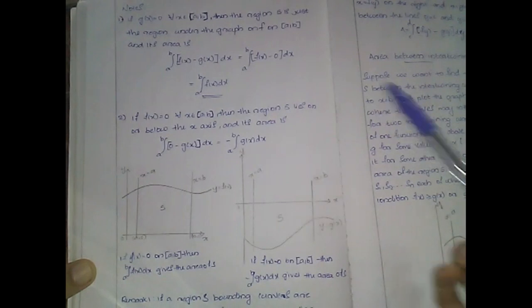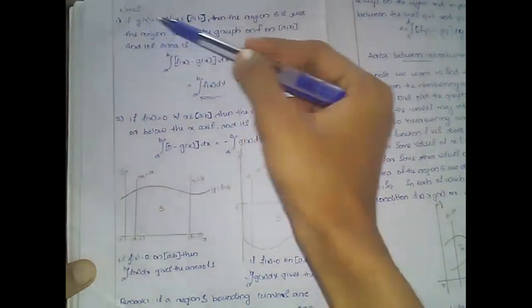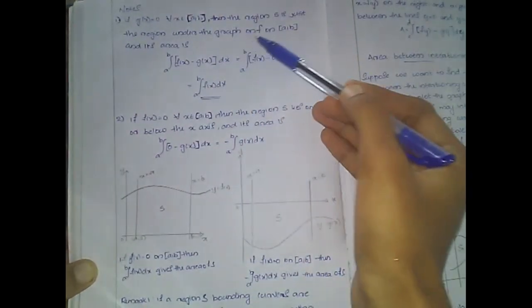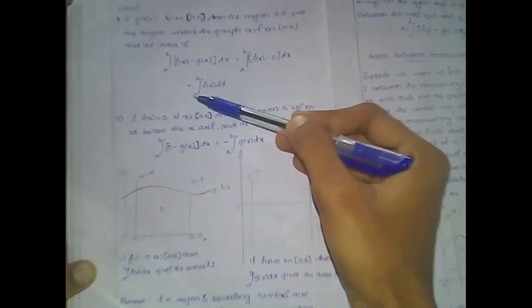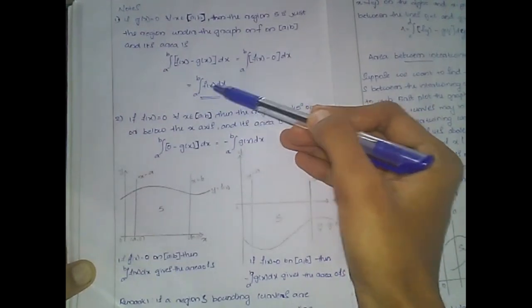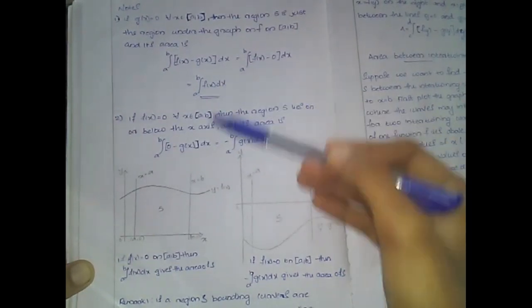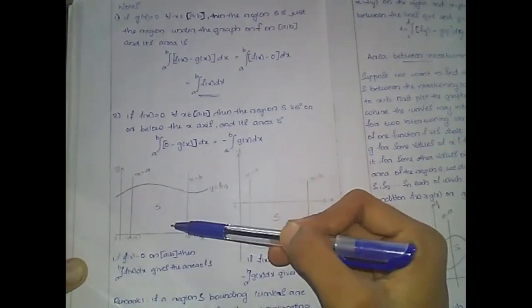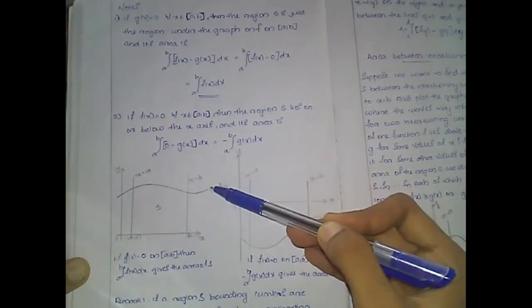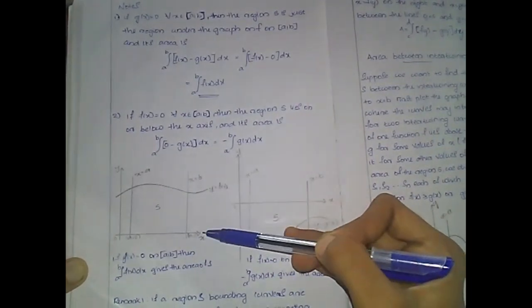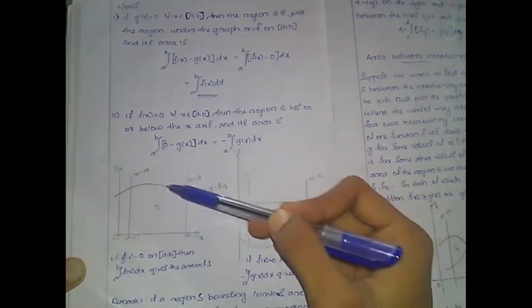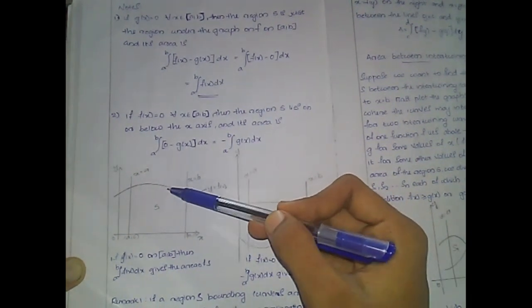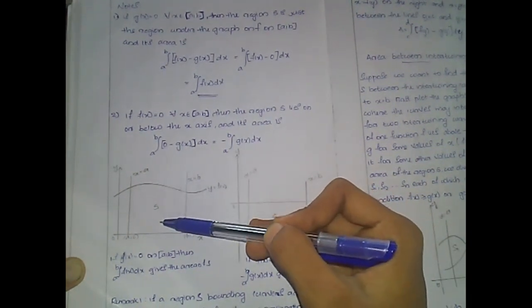There are two particular cases. First, if g(x) equals 0, then the area of the region is given by the integral from a to b of f(x) dx. Here y = g(x) is the x-axis, and the area is just the area under the graph of f(x).